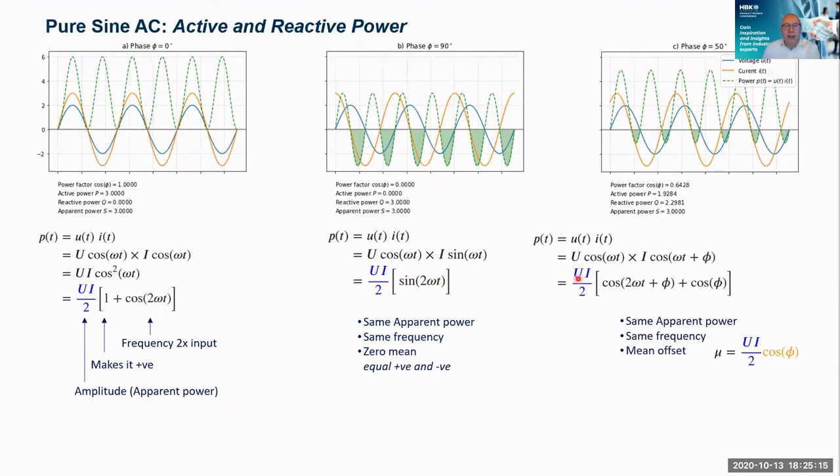And of course, the general case now where we've got an arbitrary angle φ. Again, if we simplify this equation, you'll notice we've got the same apparent power, UI/2, same frequency of 2ωt. But this time, our mean offset is UI/2 cos(φ).